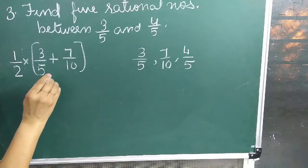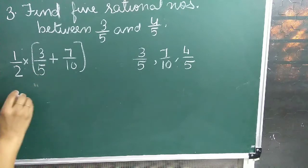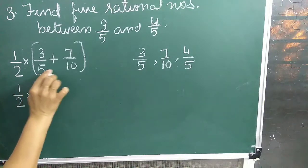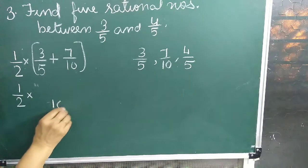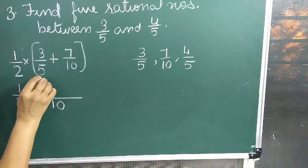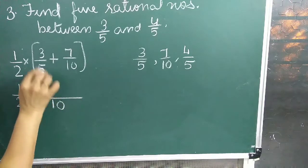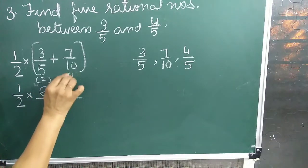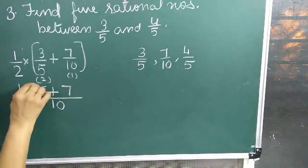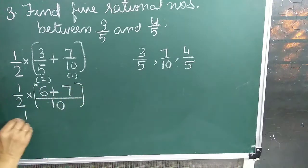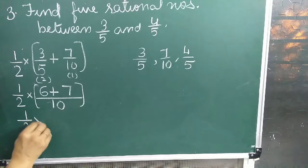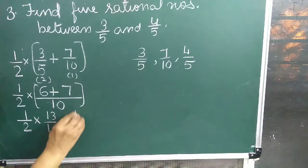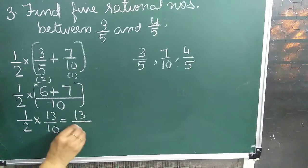LCM of 5 and 10 is 10. So 10 divided by 5 is 2, and 2 threes are 6; plus 10 divided by 10 is 1, and 1 into 7 is 7. So the expression becomes 1 upon 2 into 13 upon 10, which equals 13 upon 20.